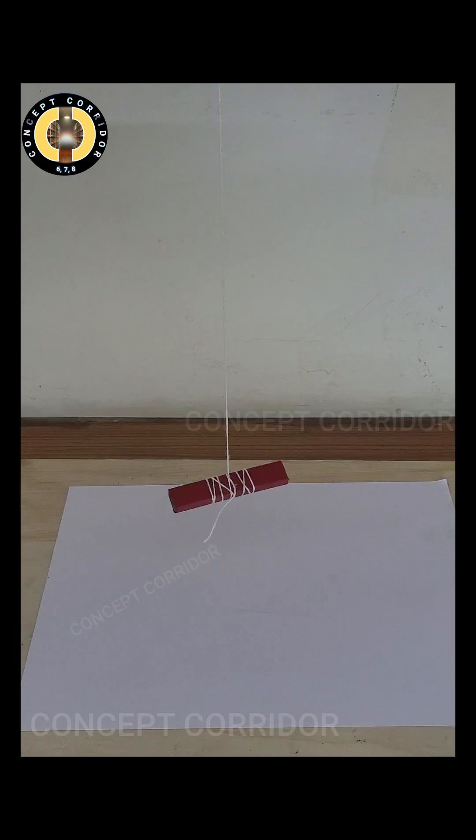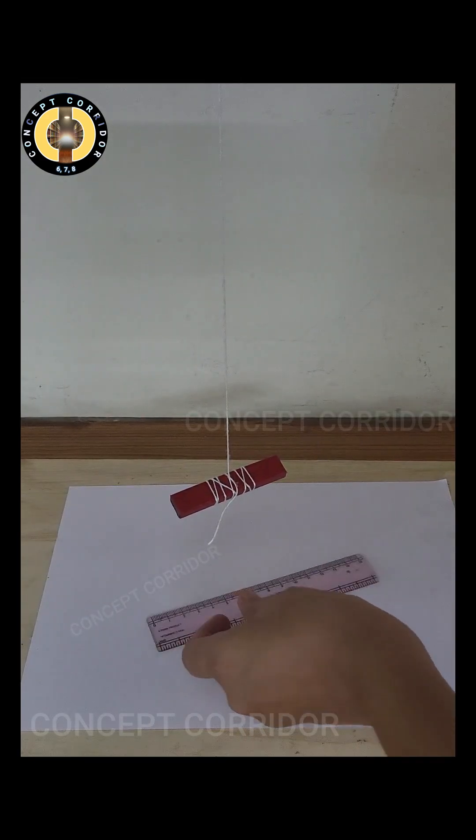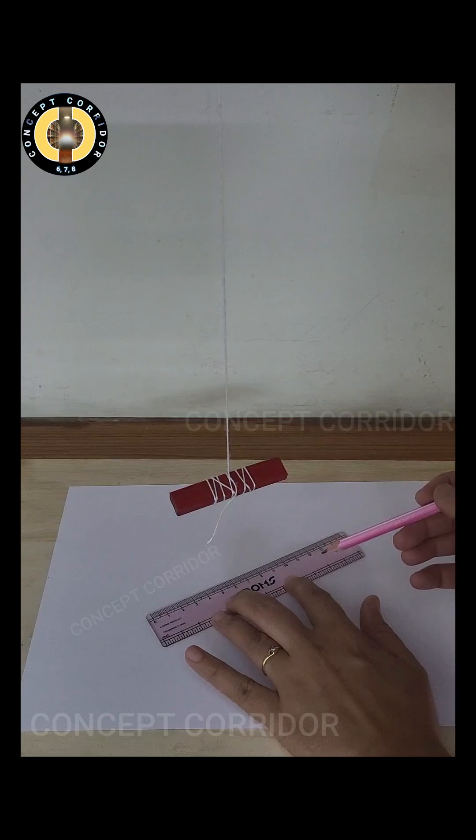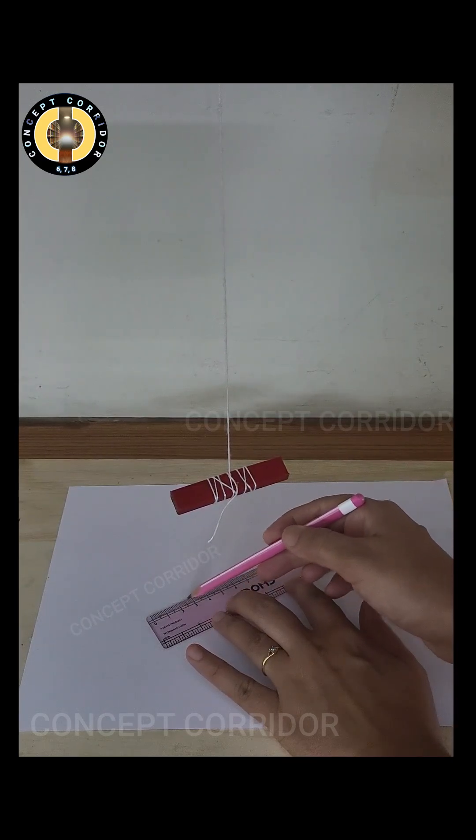Give a gentle push, it's rotating, now we will wait for it to come at rest. Now it is at rest, we will bring scale and pencil and draw a parallel line to this bar magnet on this A4 sheet paper.